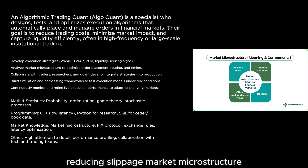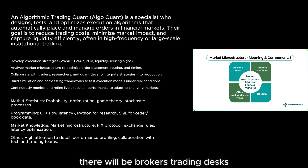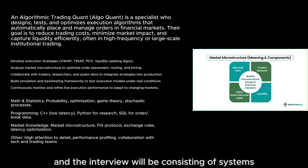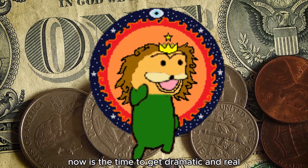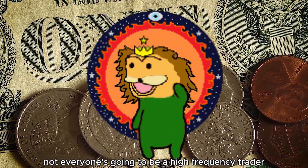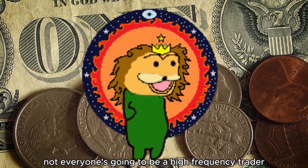Then you've got the execution and algo quant. It's much about the optimization of trade execution, reducing slippage, and market microstructure. Languages are C++ and/or Python, and the path typically involves brokers and trading desks. Interviews will consist of systems and microstructure case studies.